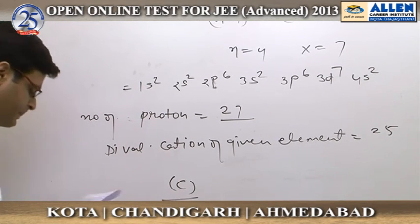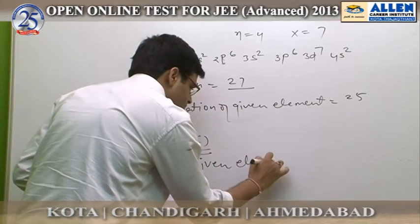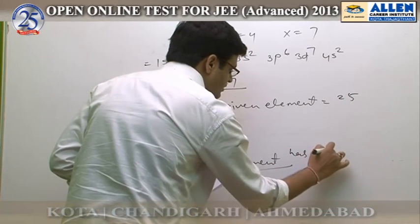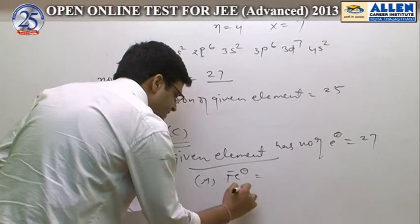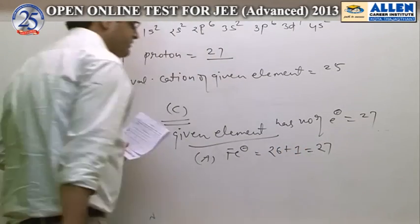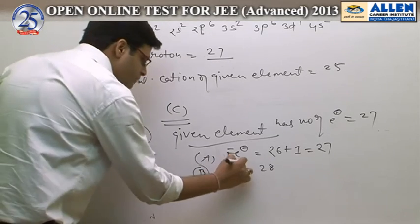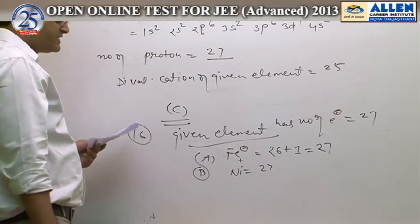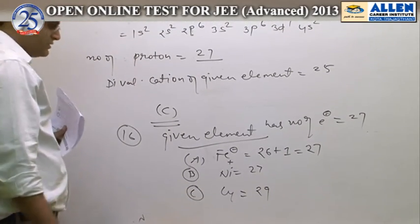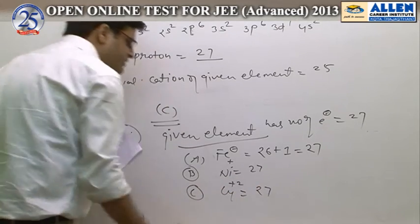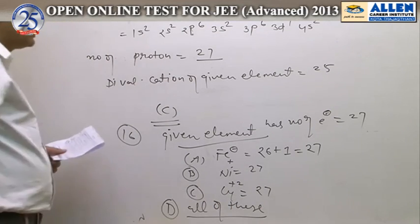Question number 16: the element is isoelectronic with which of the following species? The given element has 27 electrons. Option A: Fe⁻ — Fe has 26 electrons, but with one extra electron it has 27 electrons. Option B: Ni⁺ — Ni has atomic number 28, so 28 electrons, but Ni⁺ has one electron removed, giving 27 electrons. Option C: Cu²⁺ — copper has atomic number 29, so 29 electrons, but Cu²⁺ has 2 electrons removed, giving 27 electrons. Hence the answer is D — all of these — because all are isoelectronic with the given element.